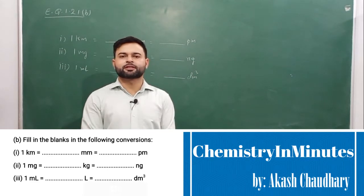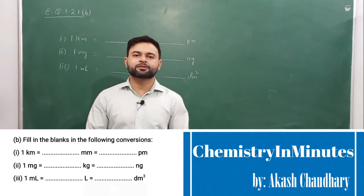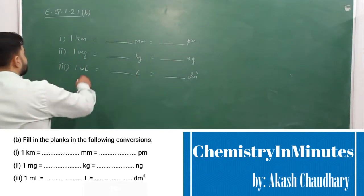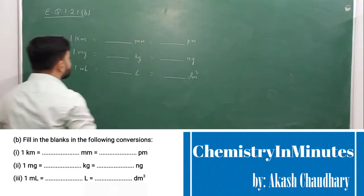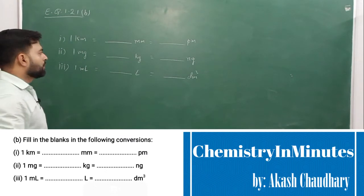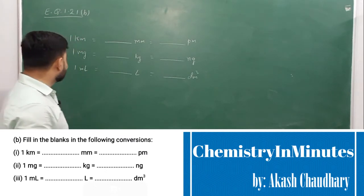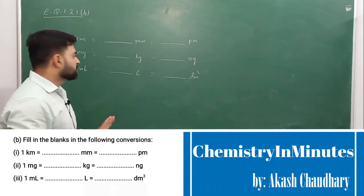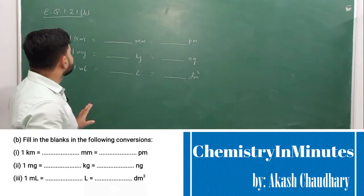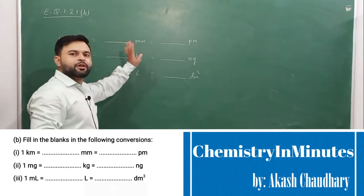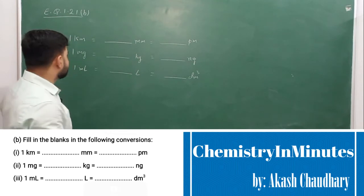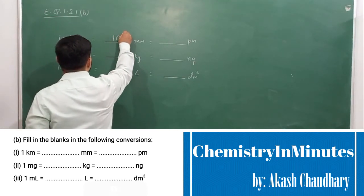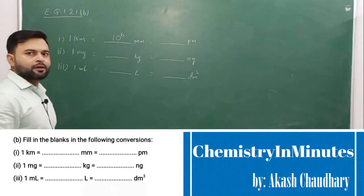Conversions mein blanks fill karnein. Let's write the answer to the question. First is: 1 kilometer equal to how much millimeter? 1 kilometer is equal to 1000 meters, and 1000 millimeters is equal to 1 meter. So 1000 into 1000 — this will come as 10 raised to the power 6 millimeters.